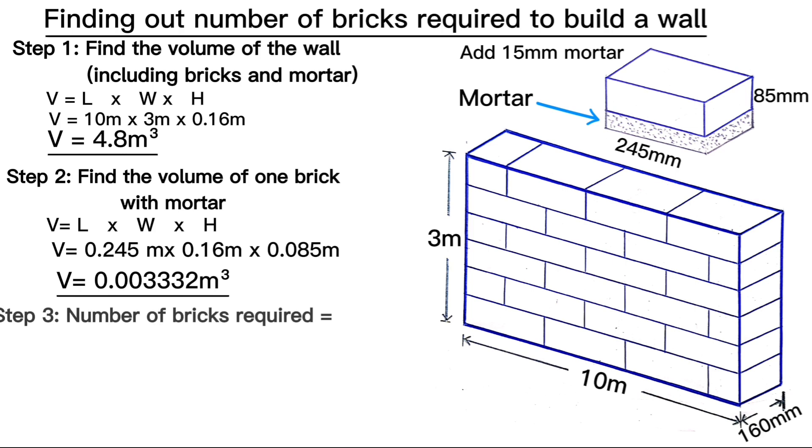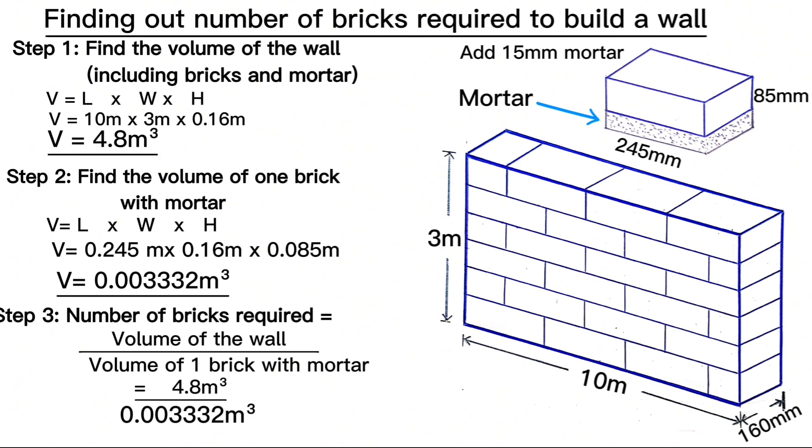Third step: using the formula, number of bricks required to build a wall is equal to volume of the wall divided by volume of one brick with mortar. When we feed in our figures here we get 1440.57.